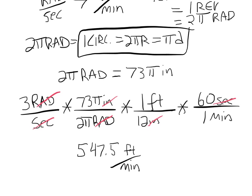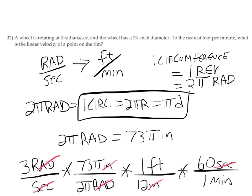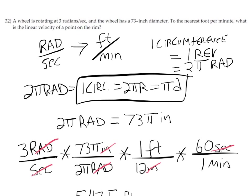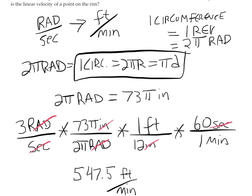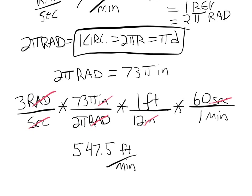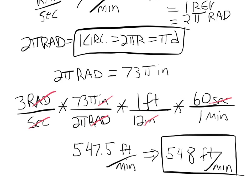Now let me double check. It says to the nearest foot. So we want to round to the nearest foot. Because of the 0.5 we would round up and call this 548 feet per minute.